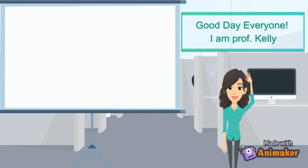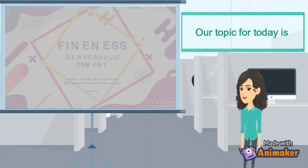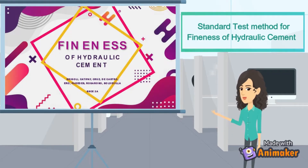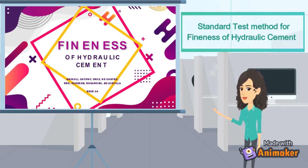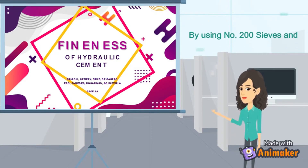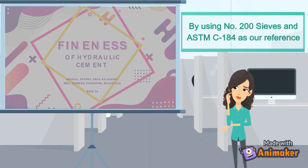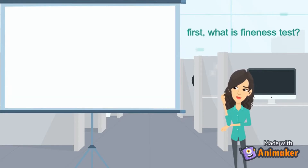Good day everyone! I am Prof. Kali. Our topic for today is a standard test method for fineness of hydraulic cement by using number 200 sieves, with ASTM C184 as our reference.